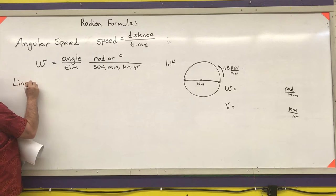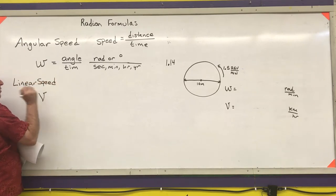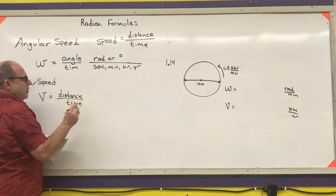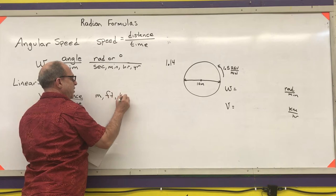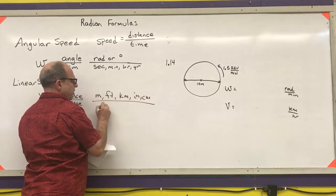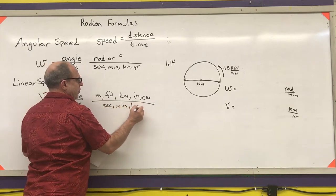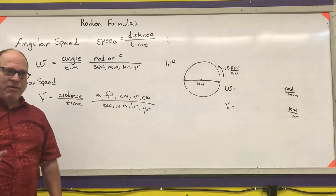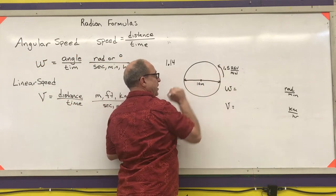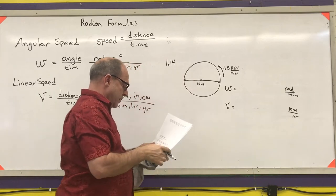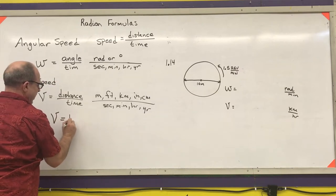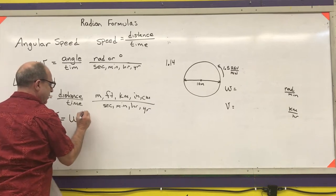Linear speed, abbreviated v, is distance over time — units like meters, feet, or kilometers per second, minute, or hour. I don't use memorized formulas; I use basic logic. The relationship between the two is that linear speed equals angular speed times the radius: v equals ω times r.